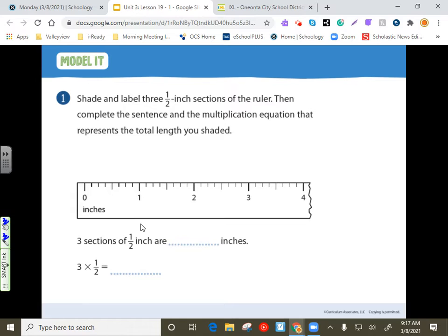Again, these hash marks represent different amounts here. So it's basically like we're using a number line. It says, shade and label three half-inch sections of the ruler, then complete the sentence in the multiplication equation that represents the total length you shaded.